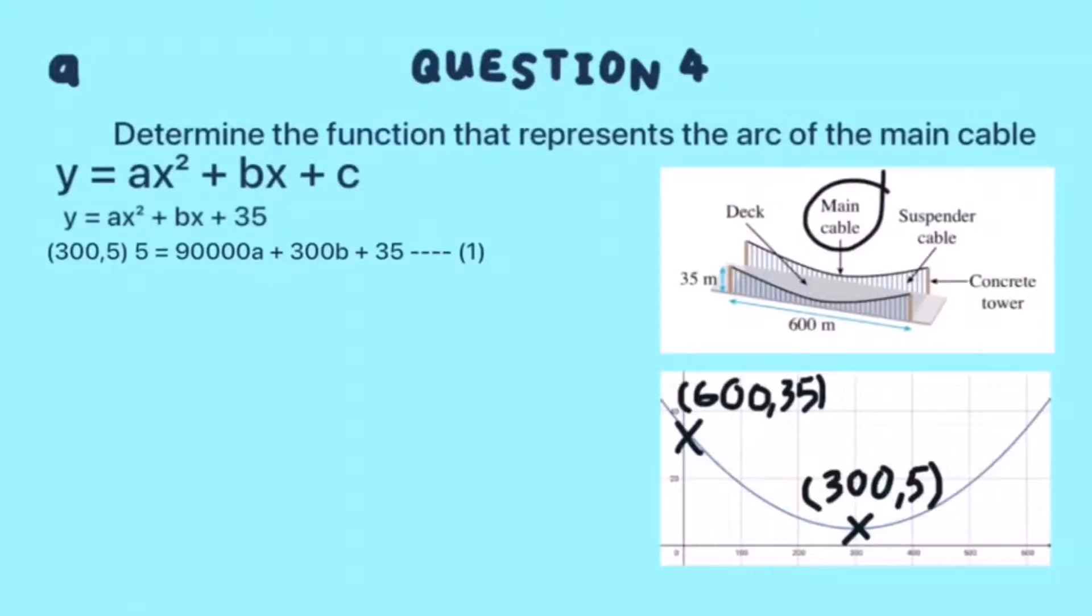Label them as equation 1. The second coordinate is (600, 35). Substitute them into the function. We will get 35 = 360000a + 600b + 35. Label them as equation 2.